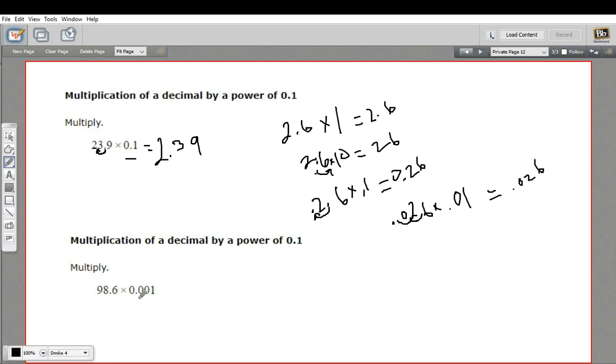All right, let's try another one. This one, we have 98.6 times 0.001. So that's one, two, three places on the decimal here. So we move the decimal point three places to the left. One, two, three. So the decimal point goes here. And in this blank spot, we have to fill in with a 0. So the answer here is 0.0986.